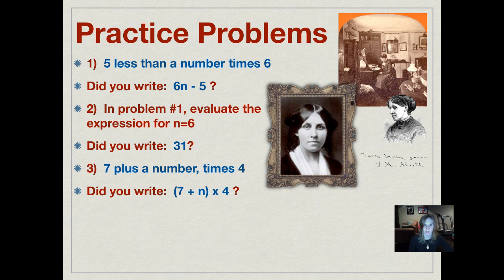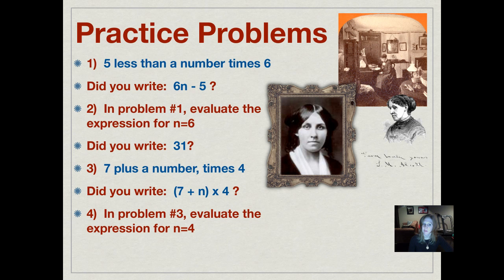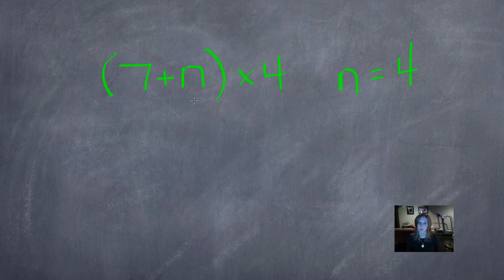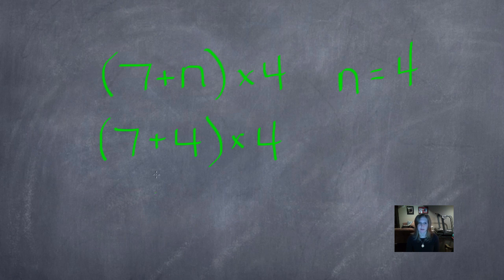Now evaluate the expression (7 + n) × 4 for n = 4. The answer is 44. Since n = 4, substitute it in: 7 + 4 = 11, because it's in parentheses we do that first. Then bring down everything else and multiply 11 × 4 = 44.